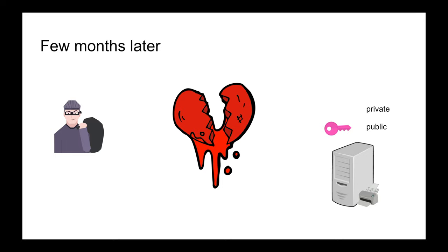The math of Diffie-Hellman involves large prime numbers. Think of it as three numbers: two private and one public. The idea is that merging all three gives you the actual shared key you want to exchange. Two of the numbers must stay private; one is public.